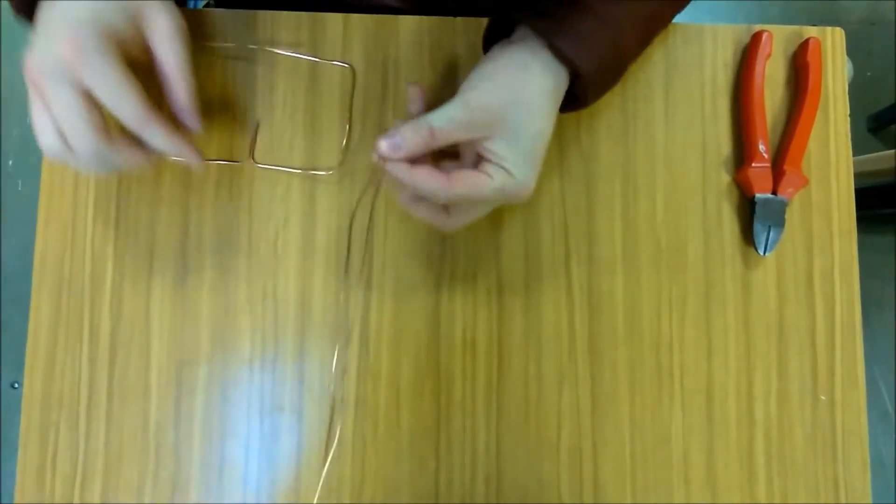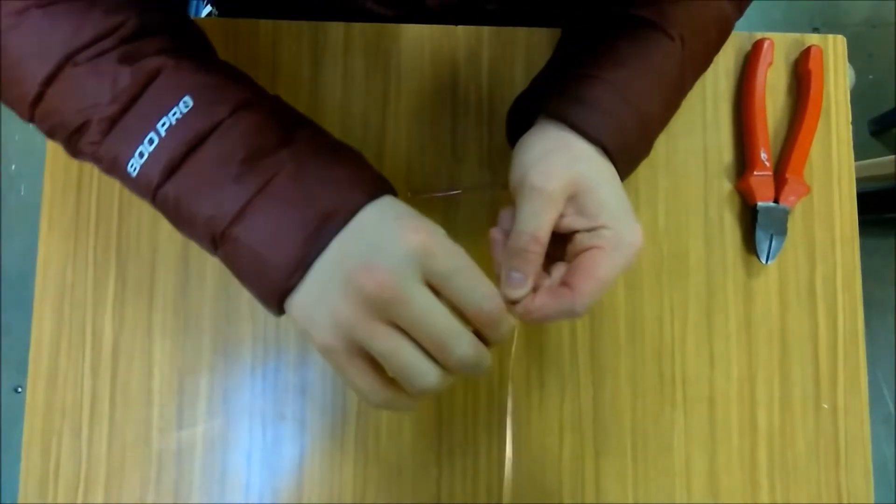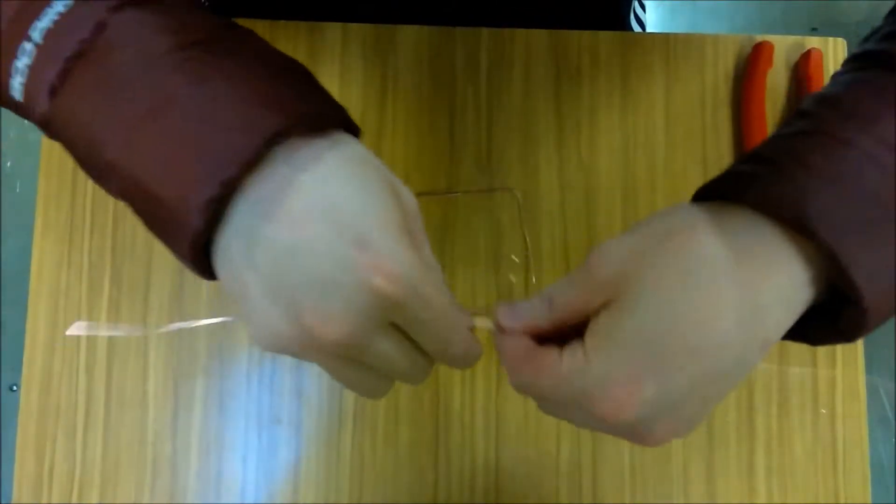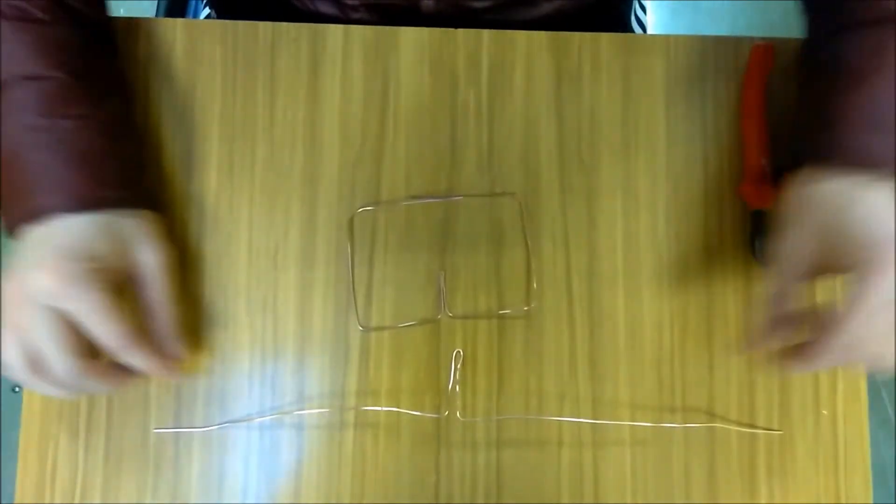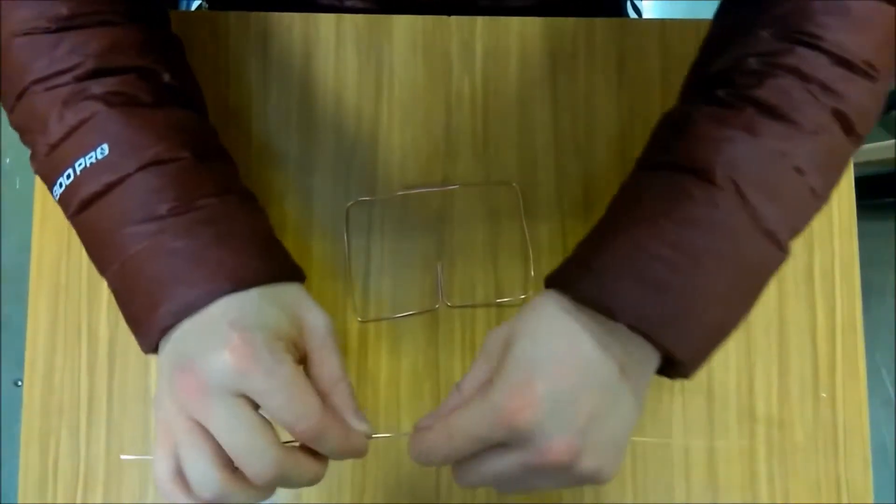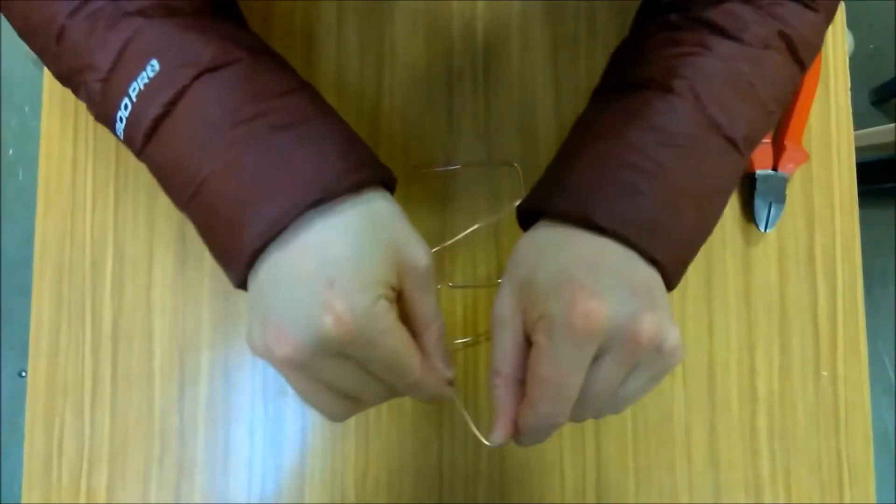Then you get an even distance like shown here. You bend it here at the same point and at the same point again, to shown like that. Then you get the length here, the same length either side. Bend down either side like that, so two sides are the same.